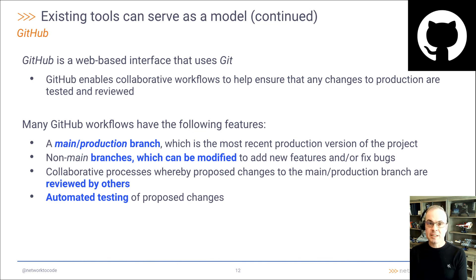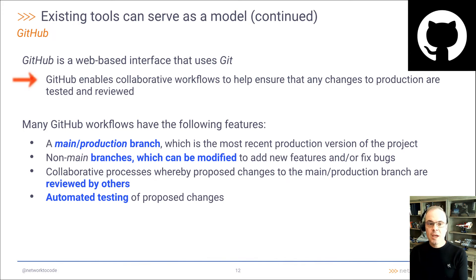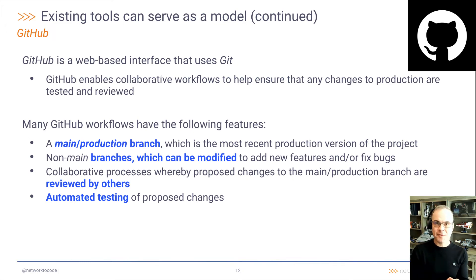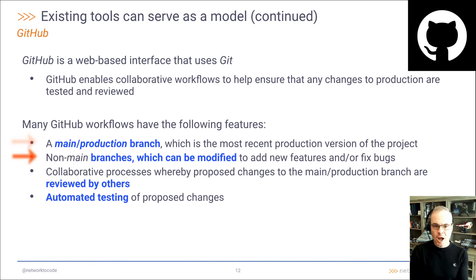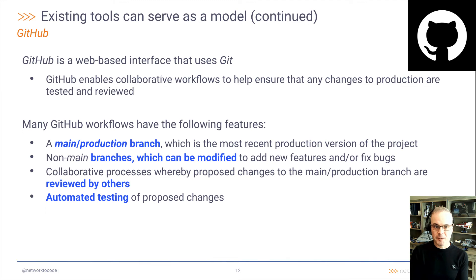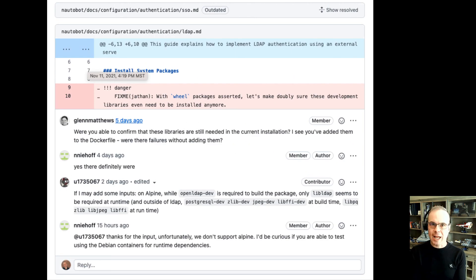The next tool we'll talk about is GitHub. GitHub is a web-based interface that uses Git under the hood. GitHub enables collaborative workflows to help ensure that any changes to production are tested and reviewed. Many GitHub workflows have the following features: a main or production branch, which is the most recent version of the project that's in production; and non-main branches, which can be modified to propose new features and or bug fixes. GitHub also allows for a collaborative process whereby proposed changes to the main branch are discussed and reviewed by others.